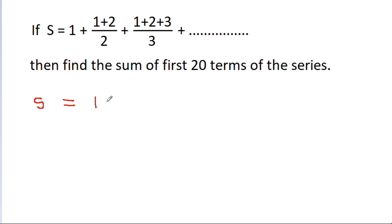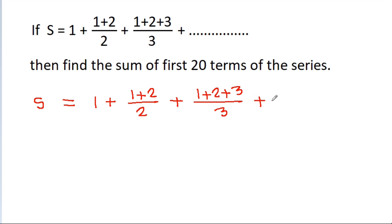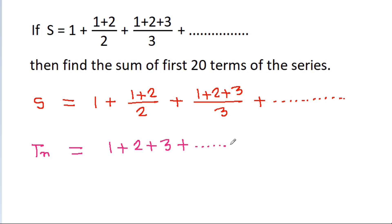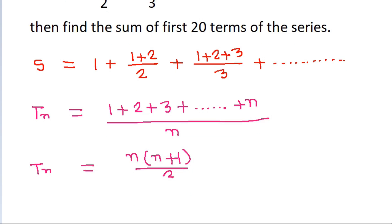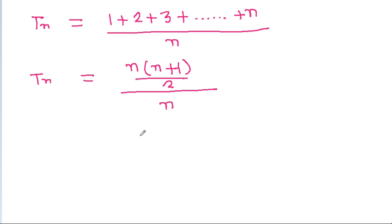S is equal to 1 plus (1+2)/2 plus (1+2+3)/3 plus so on. So any general term tn will be equal to (1+2+3+...+n)/n. And tn will be equal to the sum of natural numbers, which is n(n+1)/2, divided by n. The n cancels, so tn is equal to (n+1)/2.